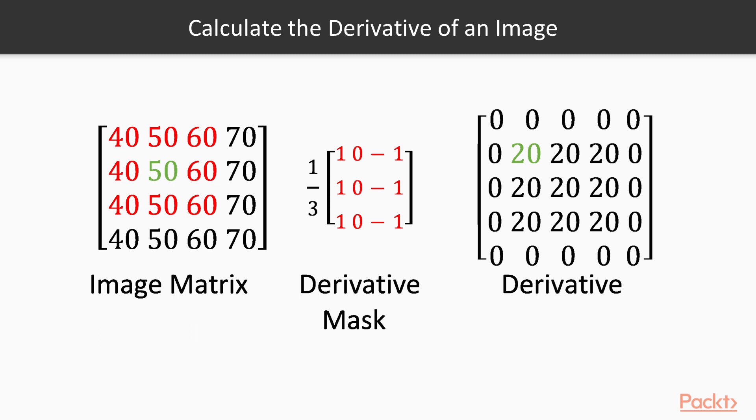Further, we illustrate how to calculate the derivative of an image. The derivative mask is placed on the value 50 at position 2 by 2. The red portion shows the overlapping pixels of the matrix and the derivative mask. After calculation, we get the output seen in green in the derivative image. It is the derivative of the pixel at 2 by 2 from the original image.